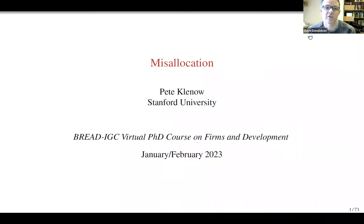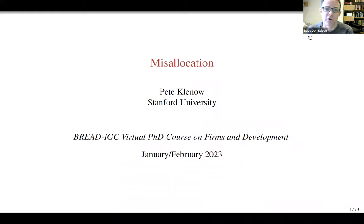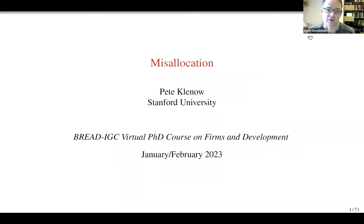He's going to be lecturing on the topic of misallocation, which touches on themes we've already covered. In the first lecture, we talked about how individual firms become more productive — learning new techniques, new technologies, getting access to those things. Today we're pivoting more towards the question of misallocation, that is, firms getting access to inputs and asking about the allocation of inputs to firms relative to other uses, like other firms.